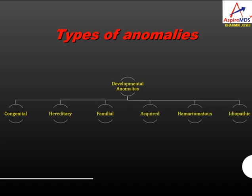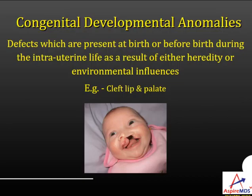Let's see them one by one. First is congenital developmental anomalies. These are anomalies where the defects are present at birth or before birth during intrauterine life, as a result of either hereditary or environmental influences on the foetus. Example is cleft lip and cleft palate.